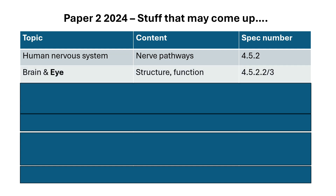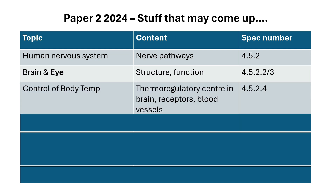The brain and particularly the eye — the eye didn't really come up last year, so learn the structure and function and how the eye responds when you're short or long sighted. Control of body temperature would be a good six-marker. So the thermoregulatory centre in the brain, receptors, and what your body does — your blood vessels may dilate if you're warm, you get more sweating and therefore evaporation from your skin.